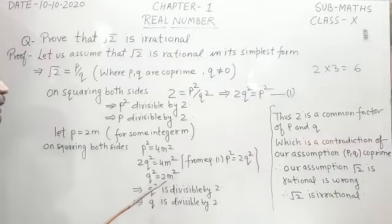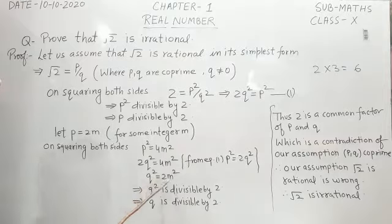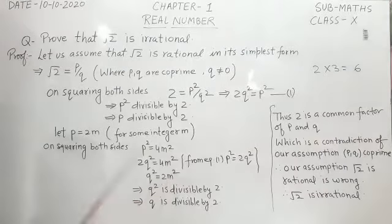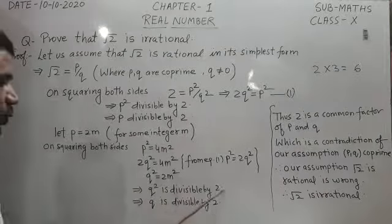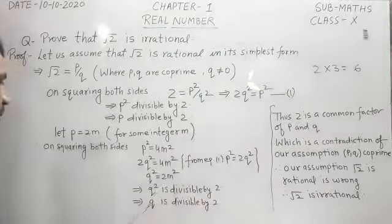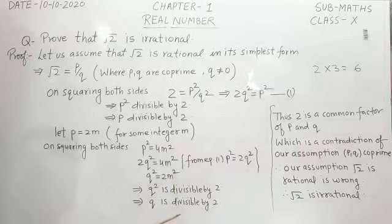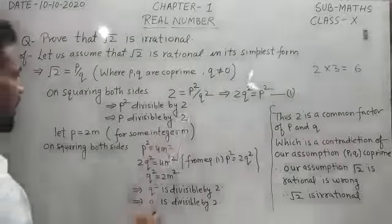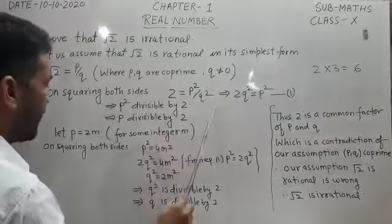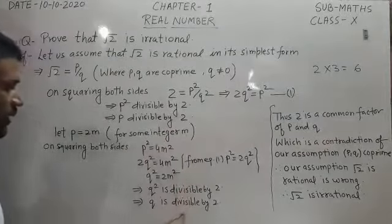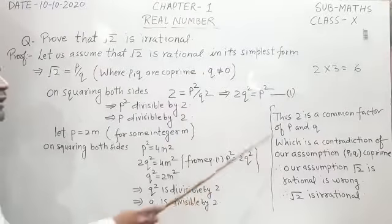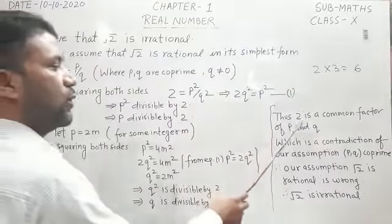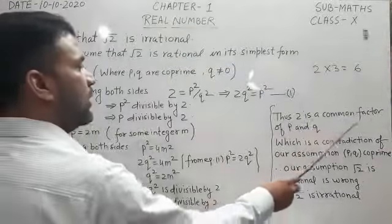From this, since q square is equal to 2m square, q square is divisible by 2, and similarly q is also divisible by 2. So now we can see that p is divisible by 2 and q is also divisible by 2, thus 2 is a common factor of p and q.